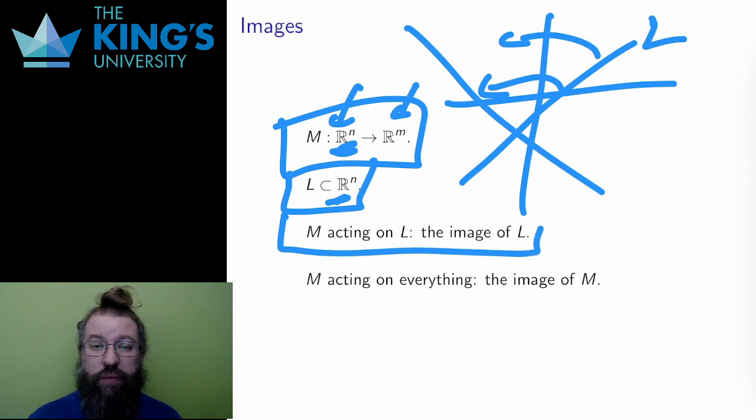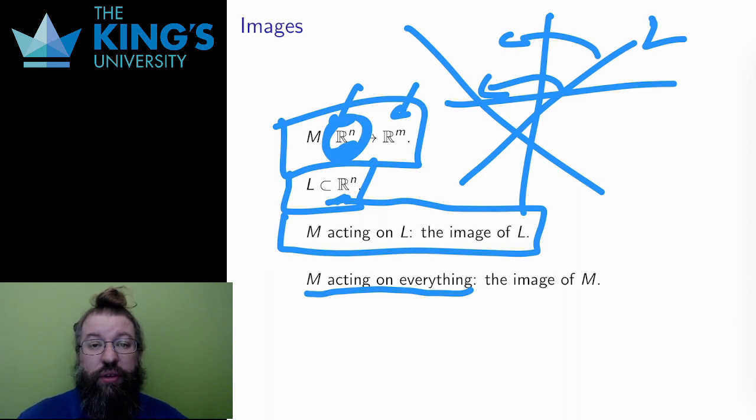This is called the image of L under the transformation. The place that L gets sent to by M. I want to be able to calculate the image, to know how a transformation affects some particular line or plane or higher dimensional subspace. If I think of M acting on the whole domain and all of Rn, I also have an image. This is the same as the notion of range for functions in calculus. All possible outputs of the function. The range might not be all of the target space. It might be a subset.